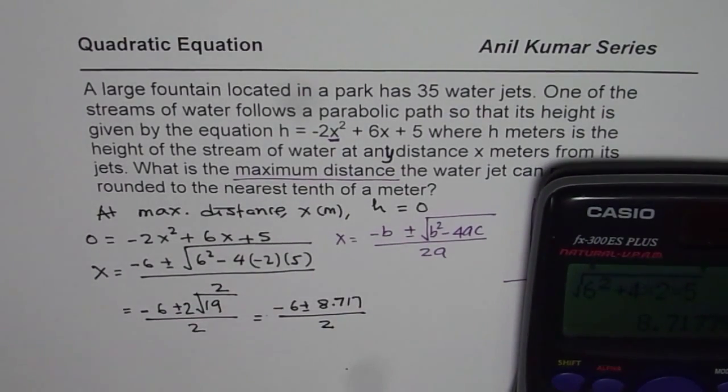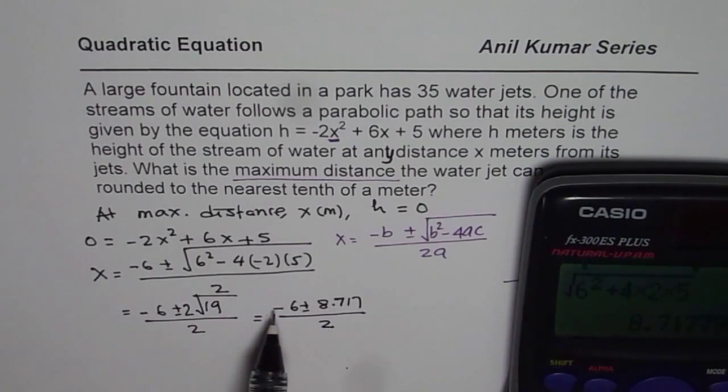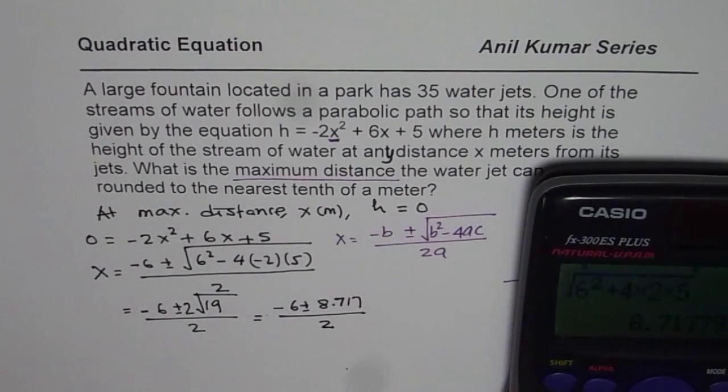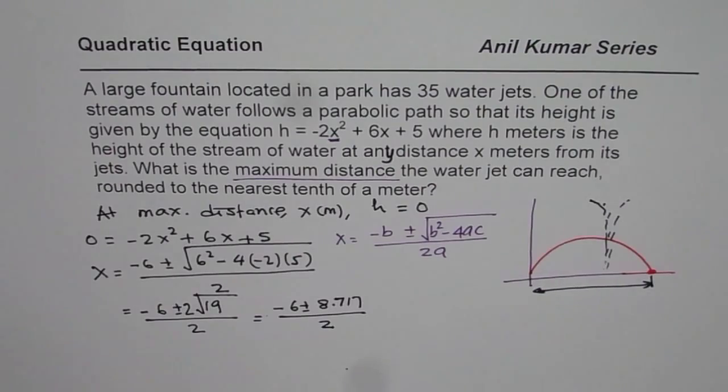So distance should be positive, right? Not negative distance. And therefore we will take the positive distance and we will take away 6 from this. We will say minus 6 plus 8.717 divided by 2 equals to, so the answer is approximately 1.35, right?